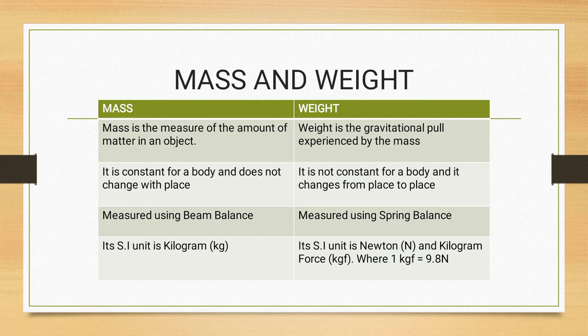Second, the mass of a body is constant everywhere; it won't change with place. But the weight of the body changes with place. For example, the weight of an apple on Earth is not the same as the weight of the same apple on the Moon, because weight depends on the gravitation of the place.